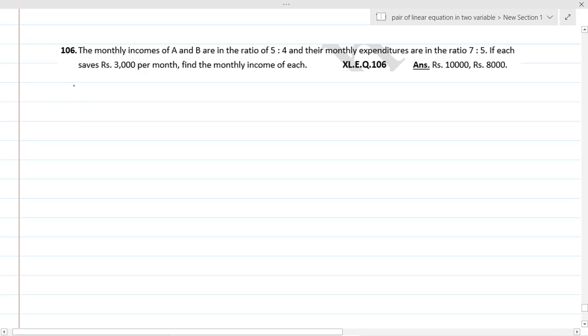Question number 106. The monthly incomes of A and B are in the ratio 5 ratio 4, and their monthly expenditures are in the ratio of 7 ratio 5. If each saves Rs. 3000 per month, find the monthly income of each.